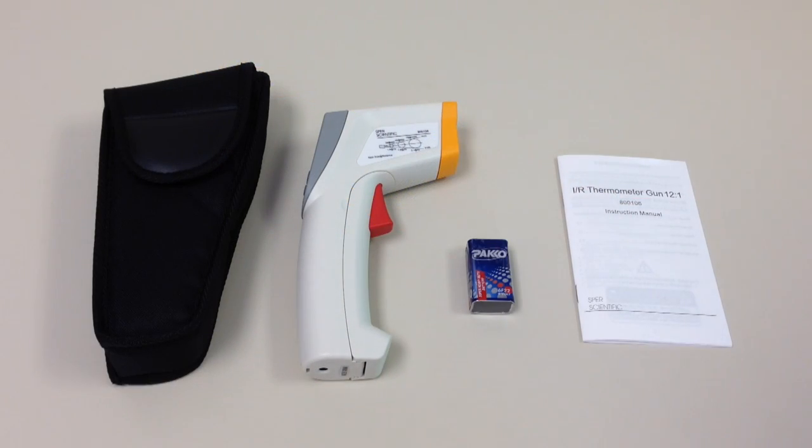Rugged and ergonomically designed Spear Scientific IR Thermometer Gun 800106 comes with a built-in tripod mount, 9-volt battery, and a soft holster with a belt loop.